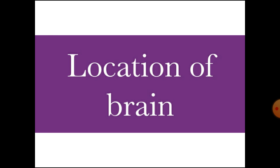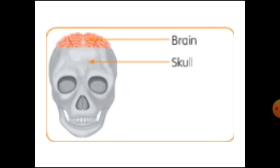Location of brain: The brain is inside our head. It is covered by a bone called the skull. The skull is like a helmet and it protects the brain from getting hurt.